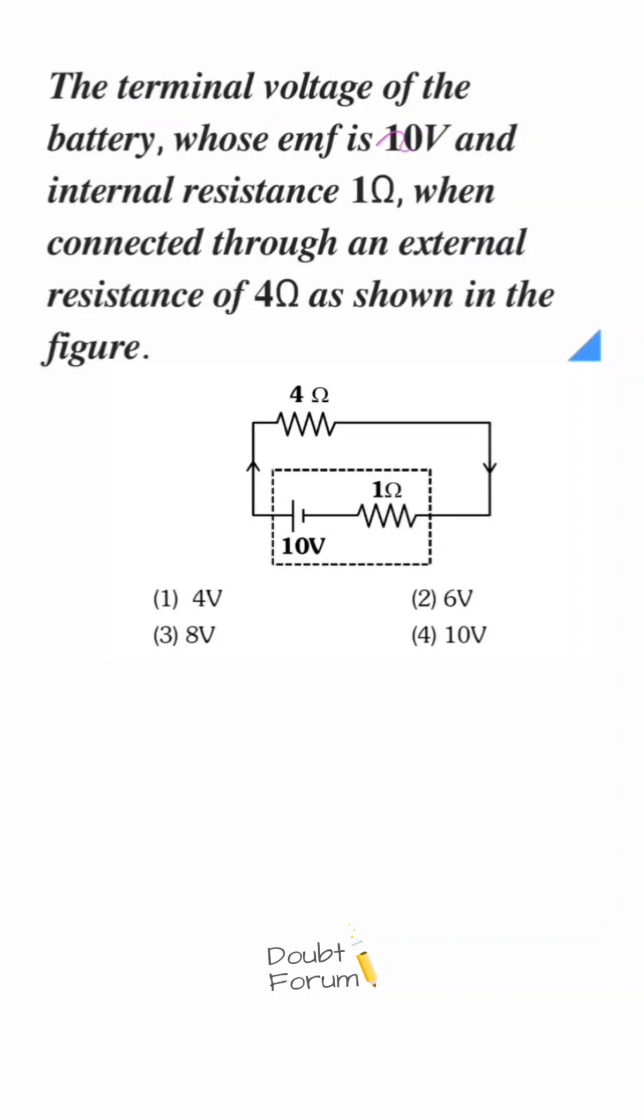The terminal voltage of the battery, whose EMF is 10 volts and internal resistance of 1 ohm, when connected through an external resistance of 4 ohms, as shown in the figure.